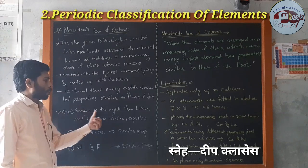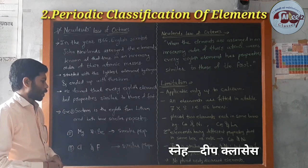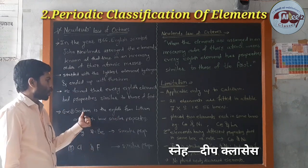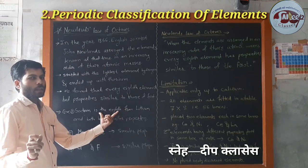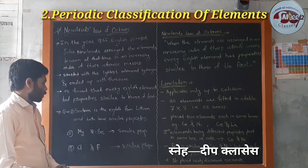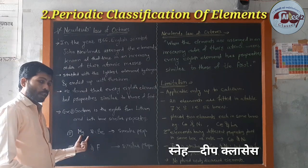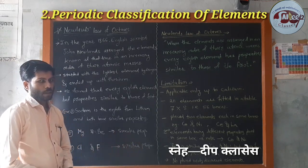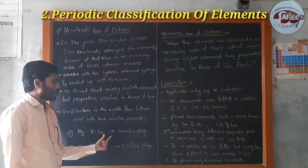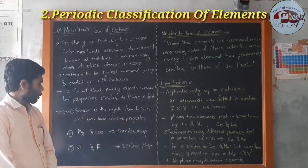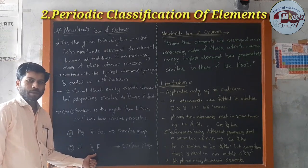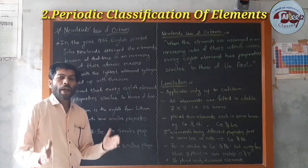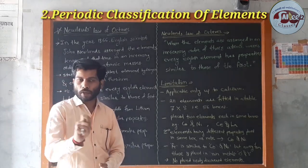For example, sodium is the eighth element from lithium, and both have similar properties — sodium and lithium are examples of Newlands' Law of Octaves. Second example: magnesium is the eighth from beryllium, and magnesium and beryllium have similar properties. Third example: chlorine is the eighth from fluorine, and their properties are similar — these are also examples of Newlands' Octaves.